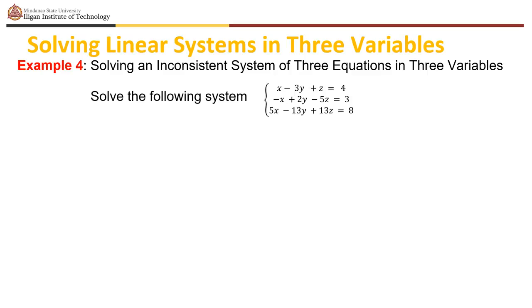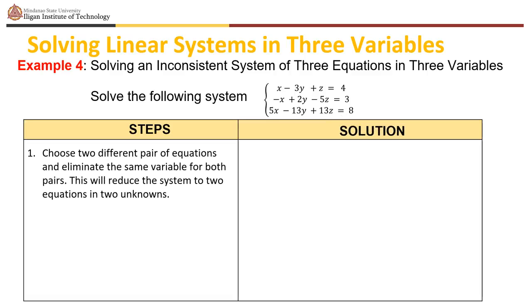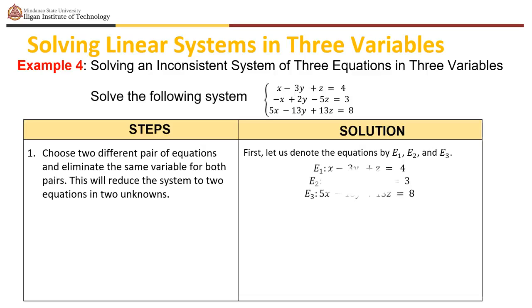Example 4 involves solving an inconsistent system of three equations in three variables. The system is: x minus 3y plus z equals 4, minus x plus 2y minus 5z equals 3, and 5x minus 13y plus 13z equals 8. Denote these as e sub 1, e sub 2, and e sub 3 respectively.